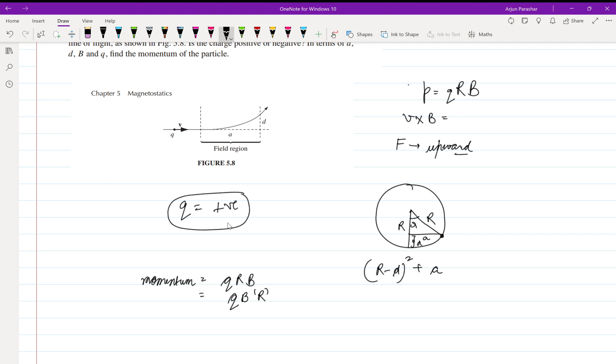This side is r minus d and this is a, so r minus d whole square. This side and this side a is equal to r square, the hypotenuse here. So on solving that you get r square plus d square minus 2rd plus a square is equal to r square.